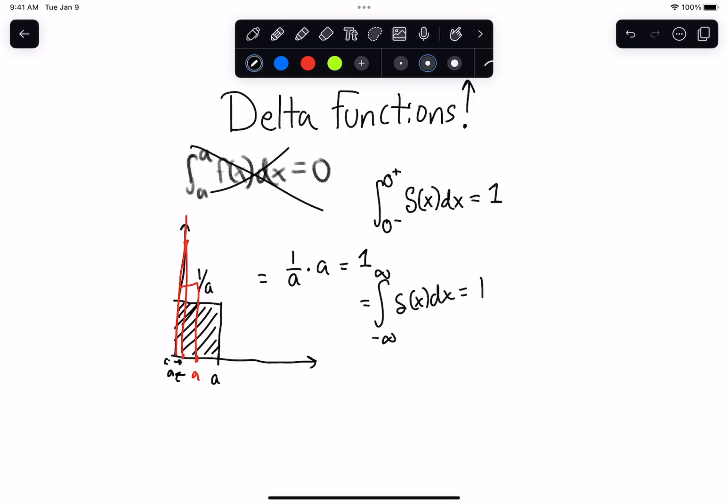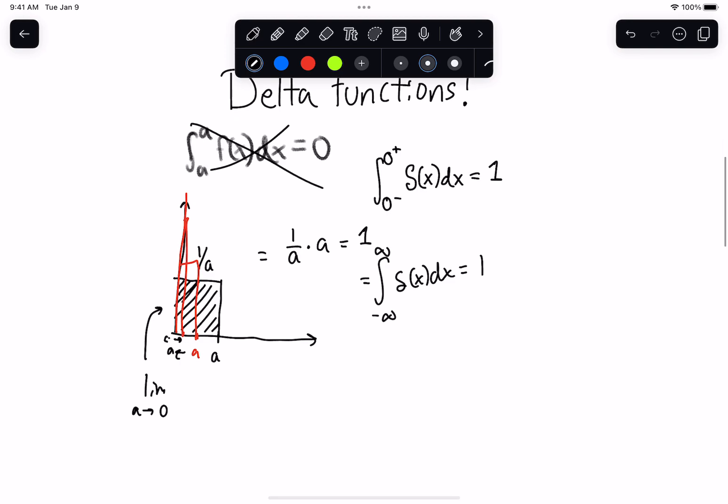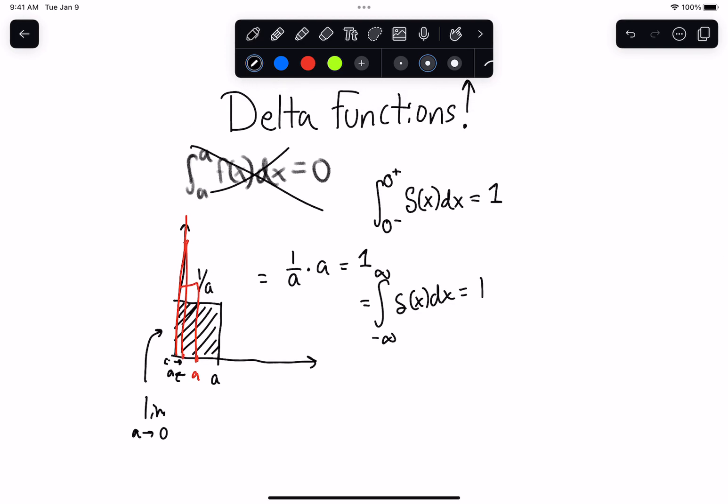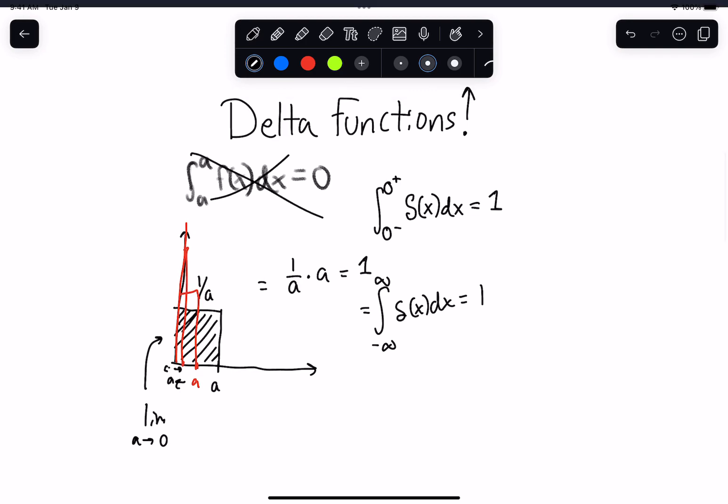But of course, this thing is 0. As we take the limit, the limit as a approaches 0 of this particular special function, which we're going to call a delta function, this is what it ends up getting. It's 0 all the way up until 0. And it's 0 as we take the limit all the way from the right until we basically get 0 from the right. So the smallest area here.